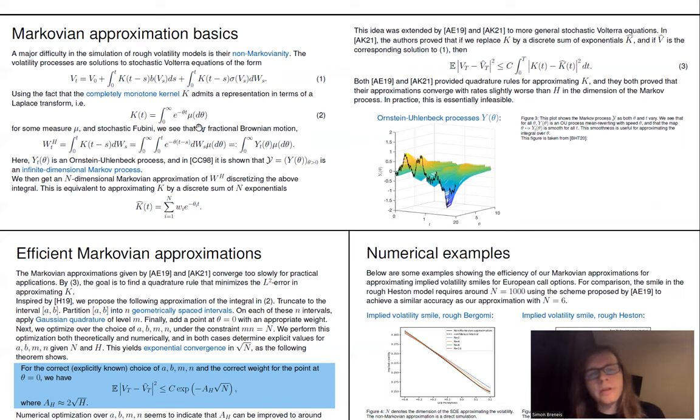And in fact, it's completely equivalent to simply discretize the integral of K. So we can just approximate K here as a finite sum of exponential functions by choosing some nodes theta_i and some corresponding weights w_i. And this is equivalent to just discretizing this integral here. And by using such an approximation K hat of our original kernel K, we then of course get an approximation of our fractional Brownian motion as a finite linear combination of Markov processes. So we then get a finite dimensional Markov approximation of fractional Brownian motion.